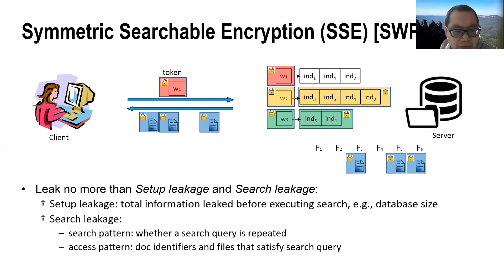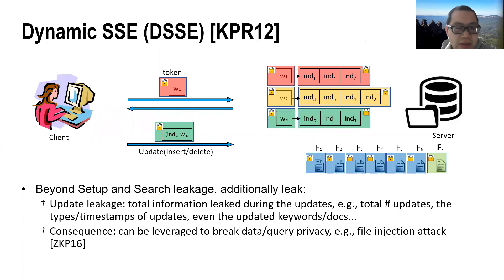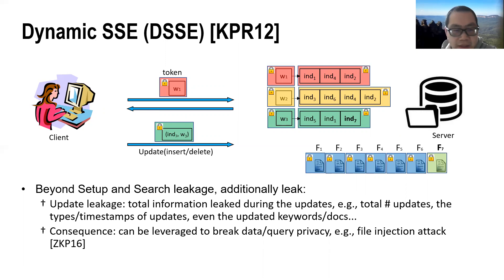The search leakage usually consists of a search pattern and an access pattern. The search pattern indicates whether a search query is repeated, while the access pattern refers to the document identifiers that satisfy the search query. In practice, dynamic symmetric searchable encryption is usually more desirable, allowing the client to insert new documents and/or delete existing ones from the database.